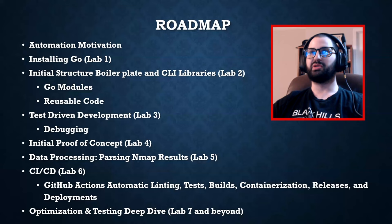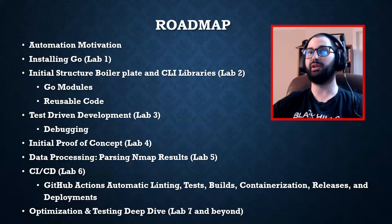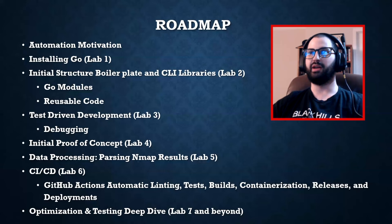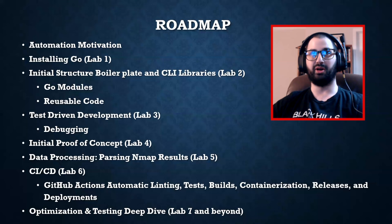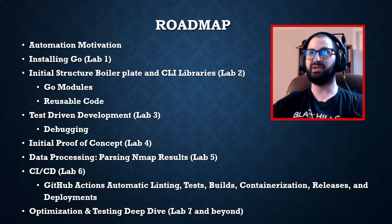A quick roadmap: we'll cover the motivation for automation, then jump into a lab for installing Go and setting up your development environment, then a national boilerplate with useful rich CLI libraries. We'll use Cobra, a full-featured CLI library for Go, then talk about Go modules and why they're awesome, and reusable code — the more code you write, the more reference material you'll have for future projects, like standard file operations.